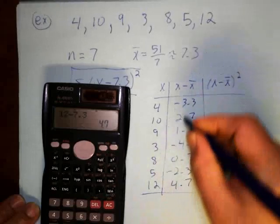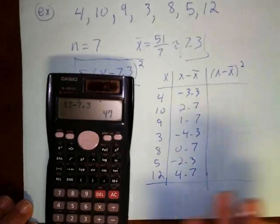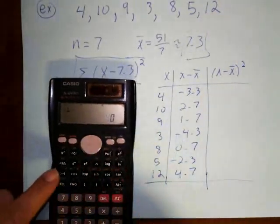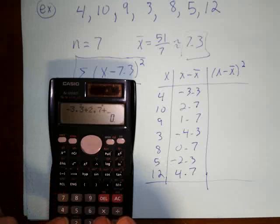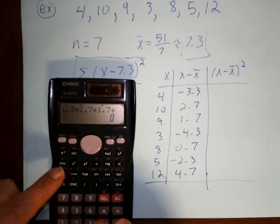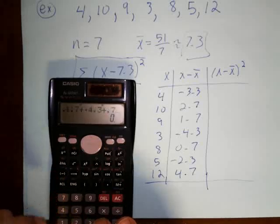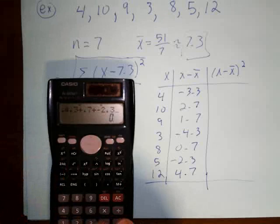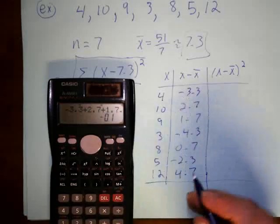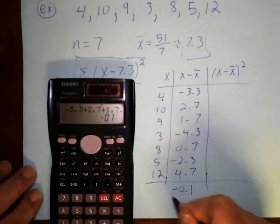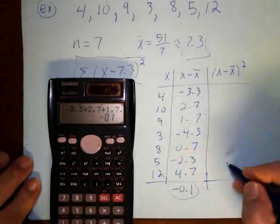Okay, so remember these are not going to—since I had to round this—these aren't going to exactly cancel each other out, but it should be close. So let's see what it is: negative 3.3 plus 2.7 plus 1.7 plus negative 4.3 plus 0.7 plus negative 2.3 plus 4.7, and I get negative 0.1. So something really close to zero, so we're on the right track here.